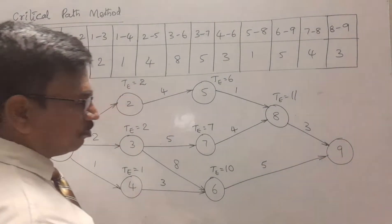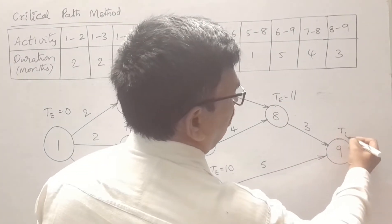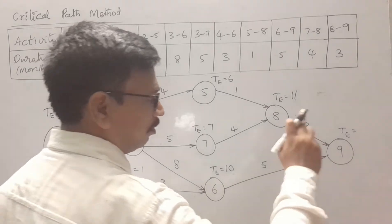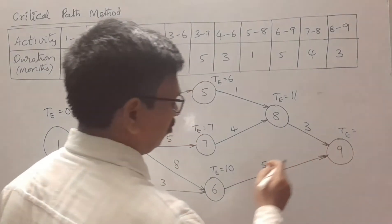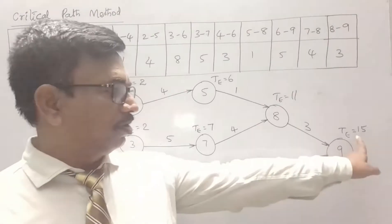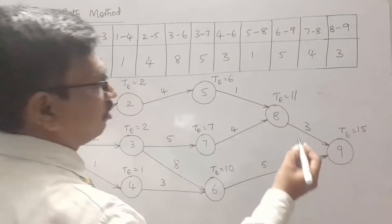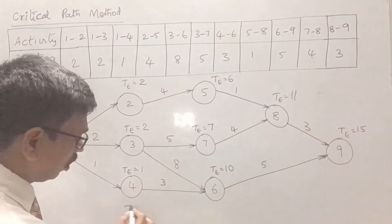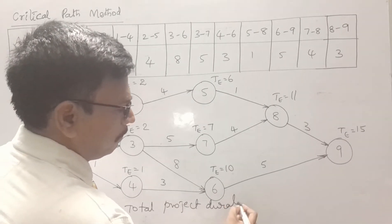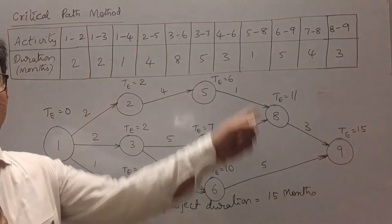For node 9, there are again 2 paths — one from node 8 and one from node 6. Considering the longer one, to reach node 9 it is 10 plus 5 = 15. The total project duration is the earliest finish at the last node, which is 15. Since the durations are in months, the total project duration is 15 months.